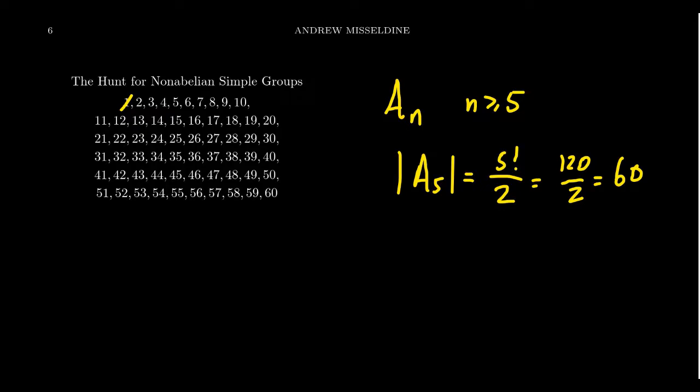The next one to talk about is groups of order prime. Why can't we have a simple group of order prime? Well, actually we can. The prime order groups are simple, but they're also cyclic. They're abelian. So if we're looking for non-abelian simple groups, its order can't be prime.